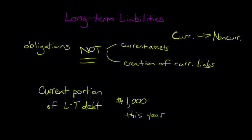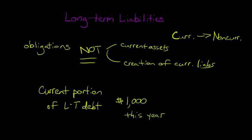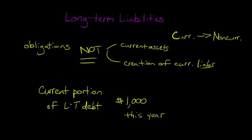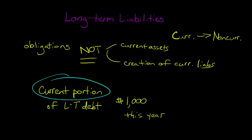What does the firm expect to do? Does the firm want to use current assets to satisfy that current portion of long-term debt — is it going to take cash and pay this thousand dollars? If so, then this current portion of long-term debt, even though it's associated with maybe a 30-year bond, since we're going to use current assets to pay that portion, it would be a current liability.